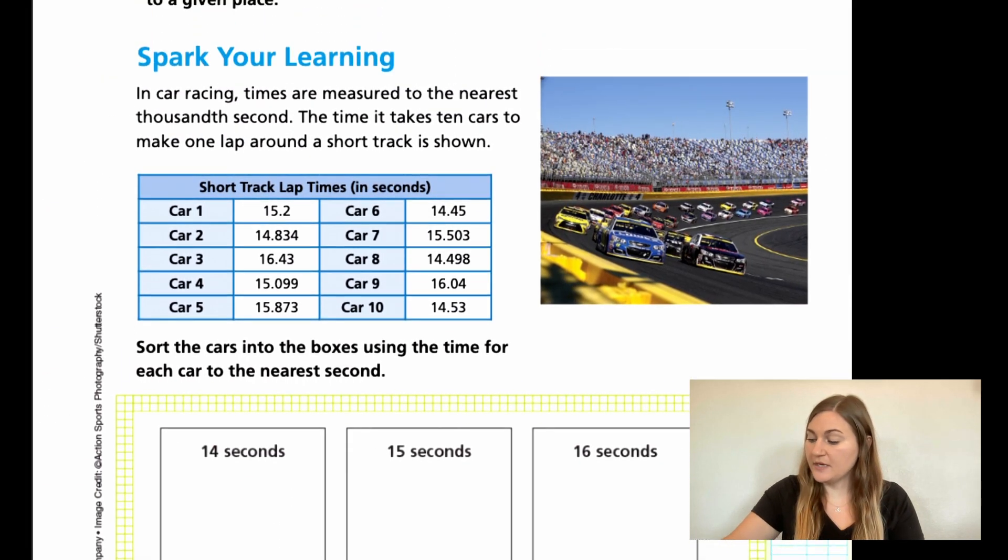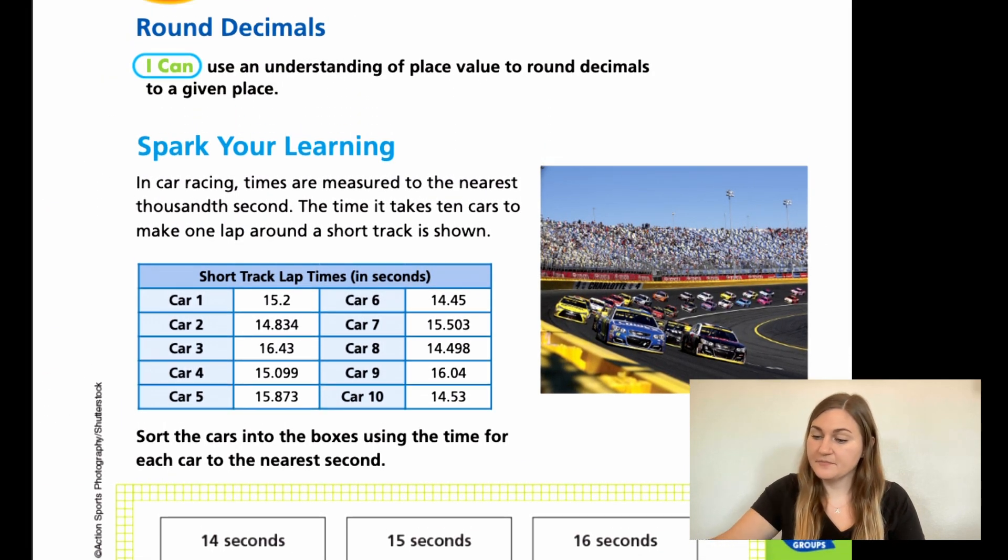So moving into the lesson, we're on page 327. We have a Spark Your Learning that says in car racing, times are measured to the nearest thousandth second. The time it takes 10 cars to make one lap around a short track is shown. And then it gives us a little chart underneath. So it has in blue all 10 cars and in white it has their times.